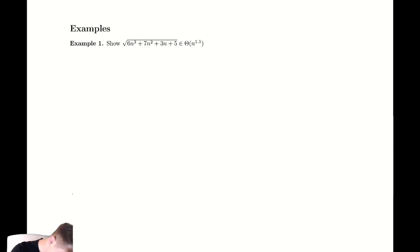We're going to do that by showing √(6n³ + 7n² + 3n + 5), that horrible mess of function, is going to be in big O of n to the 1.5. That's one of the steps we need to show. We need to also show that same function is in big omega of n to the 1.5.